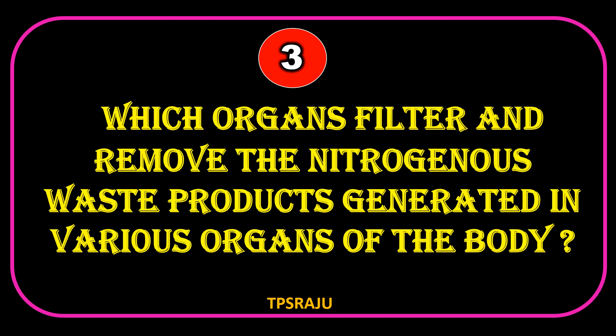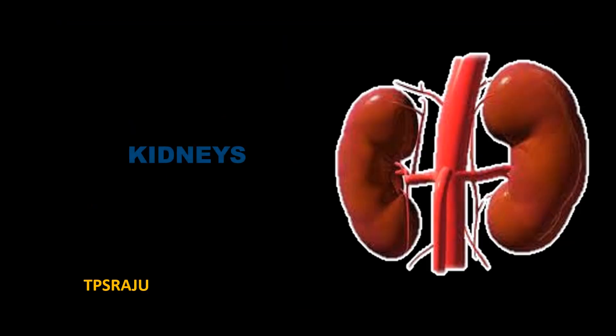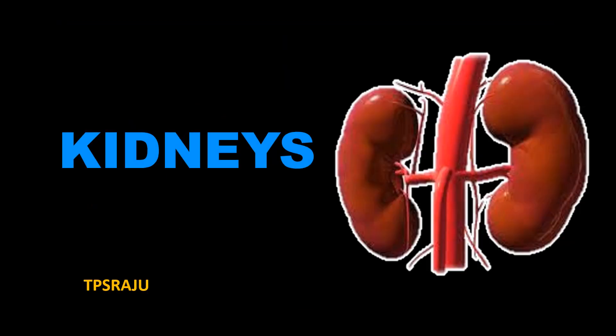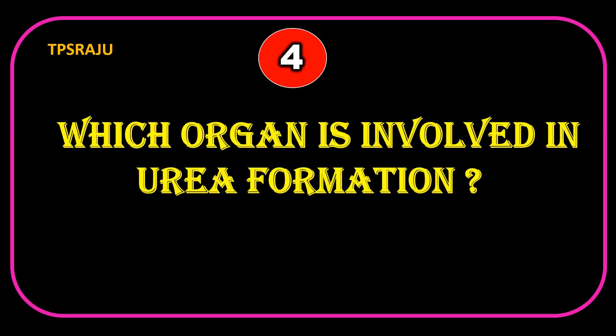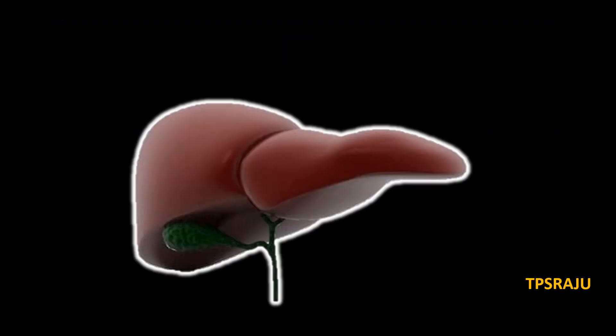Which organs filter and remove the nitrogenous waste products generated in various organs of the body? Kidneys. Which organ is involved in urea formation? Liver.